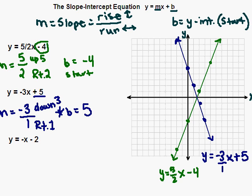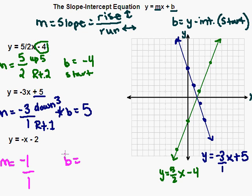Last example: y equals negative x minus 2. Again, let's identify our slope and y-intercept before graphing. My slope is the negative in front of the x — remember, that's really a negative 1, there's always an imaginary 1 there. So we have negative 1 over 1. Our y-intercept is this minus 2, so our y-intercept is negative 2.